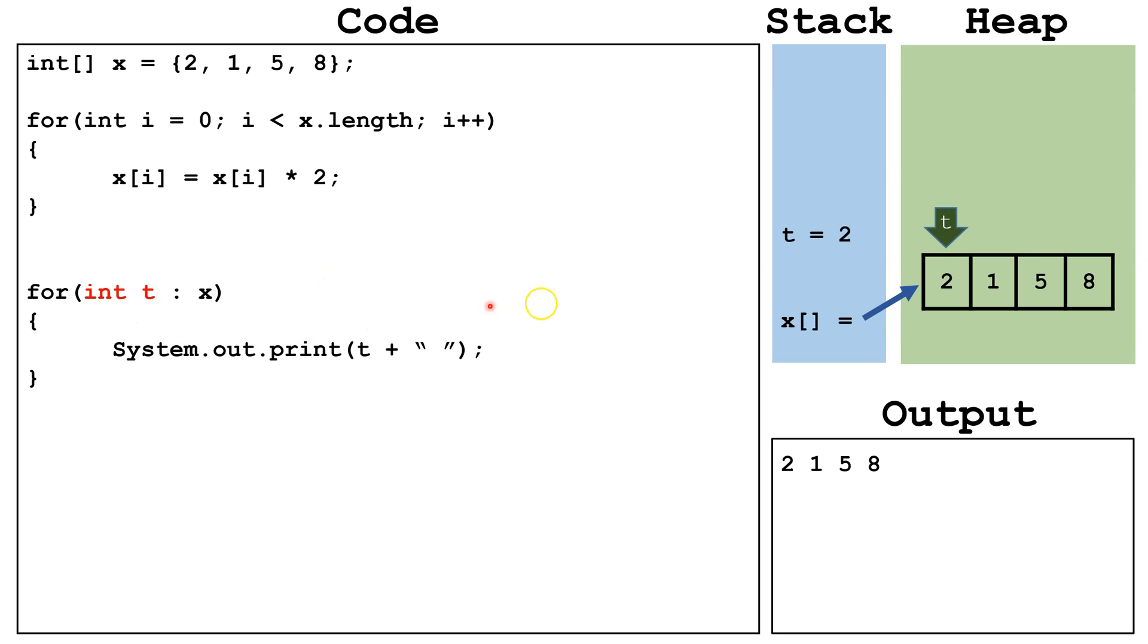We start by declaring t and setting it equal to the value inside index 0, so t equals 2. Now we're going to print off t and a space. Now, we'll move t to index 1, so t will hold the number 1. Then we'll print off the value of t, which is 1.